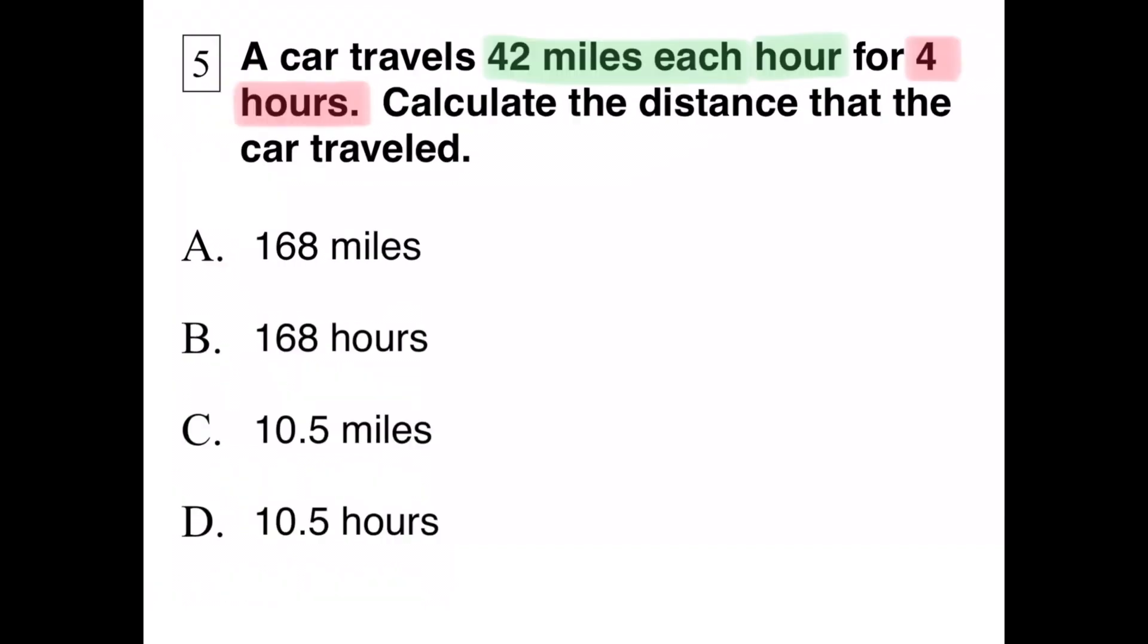I highlighted some of the important information that they gave us. In green, I highlighted 42 miles each hour, and in red, I highlighted four hours.